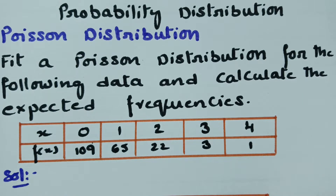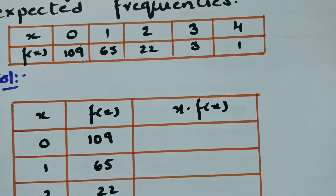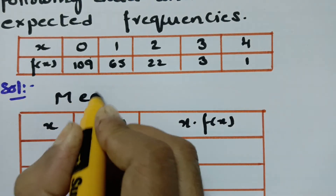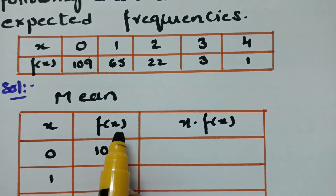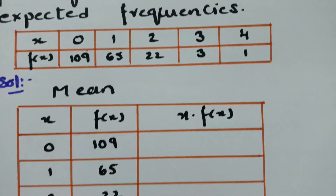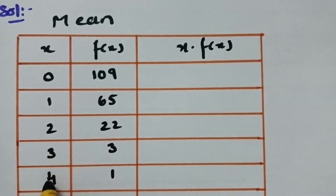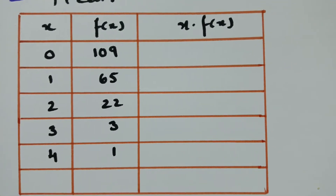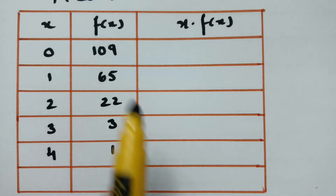To find the expected frequencies, we first have to calculate the mean value. We set up a table with x values and f(x) — the frequencies taken from the data given in the question.